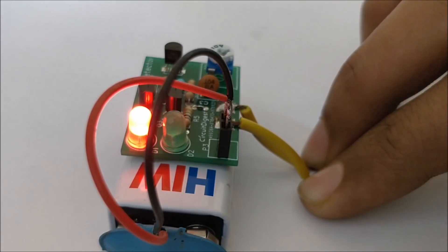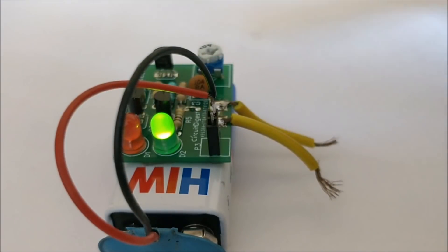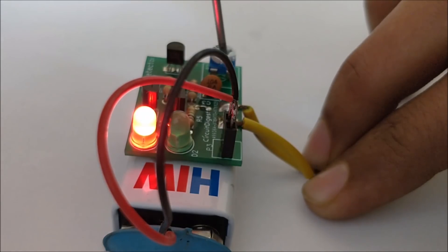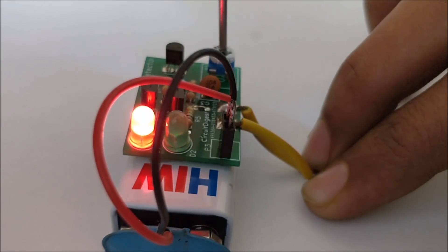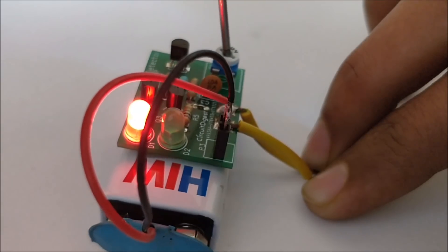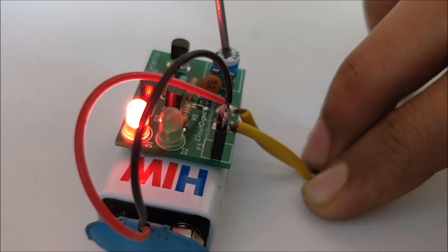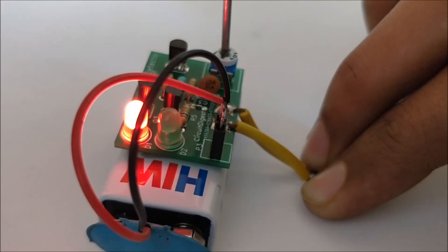If you don't have any moisture on your fingers, it will be in green color. We also have a potentiometer here where you can adjust the sensitivity of the circuit. Let me adjust it a bit so that it says that I am speaking the truth.